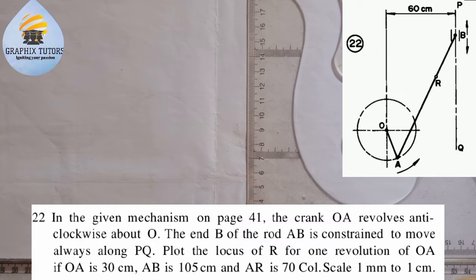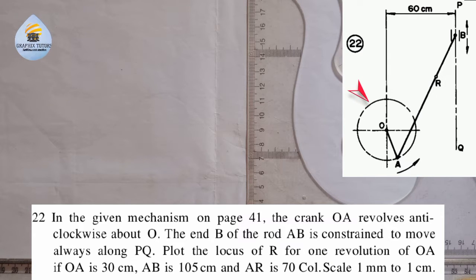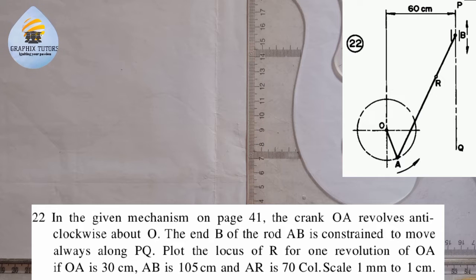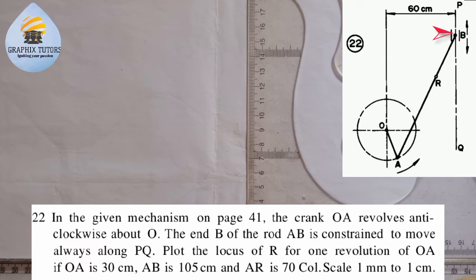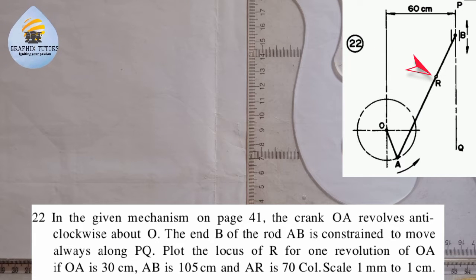In the given mechanism, the crank OA revolves anti-clockwise about O. This is O and this is A — that is the crank. The end B of the rod AB is constrained to move always along PQ, so as A moves anti-clockwise about O, B is constrained to move vertically upward and downward along PQ. We are told to plot the locus of point R for one complete revolution of OA.